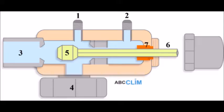Cette vanne permet 3 types de positionnement : la position en cale avant, la position en cale de lecture, et la position en cale arrière. On obtient une de ces 3 positions en agissant sur le carré de manœuvre numéro 6. Lorsque vous allez dévisser, c'est-à-dire tourner dans le sens inverse d'une aiguille d'une montre, le pointeau numéro 5 va reculer et se mettre en cale arrière. À l'inverse, lorsque vous allez serrer le carré de manœuvre dans le sens horaire, le pointeau va s'avancer.